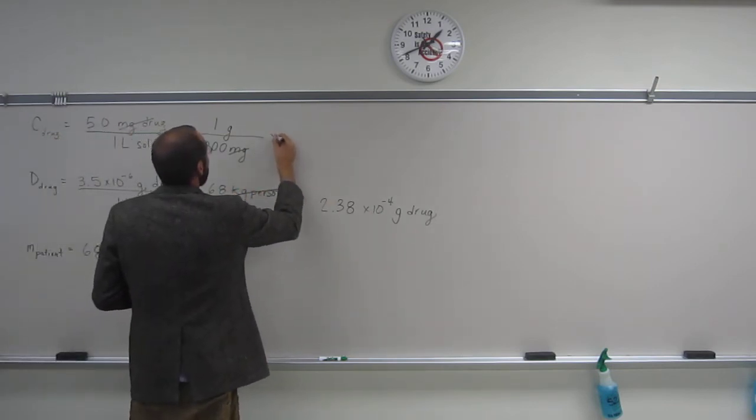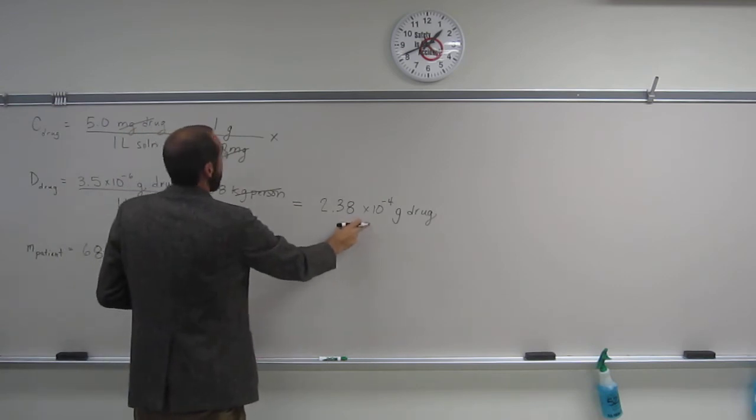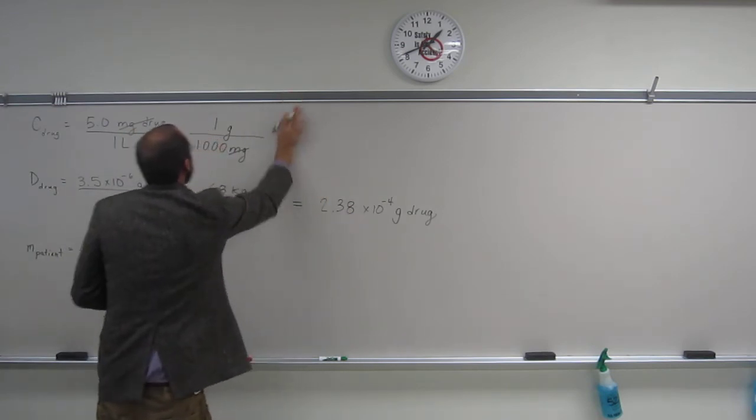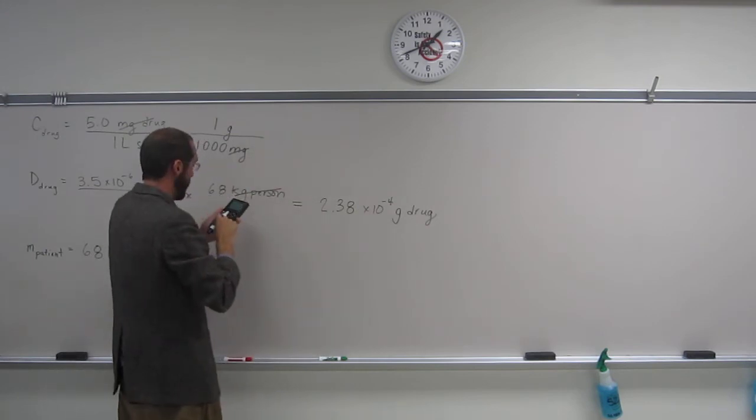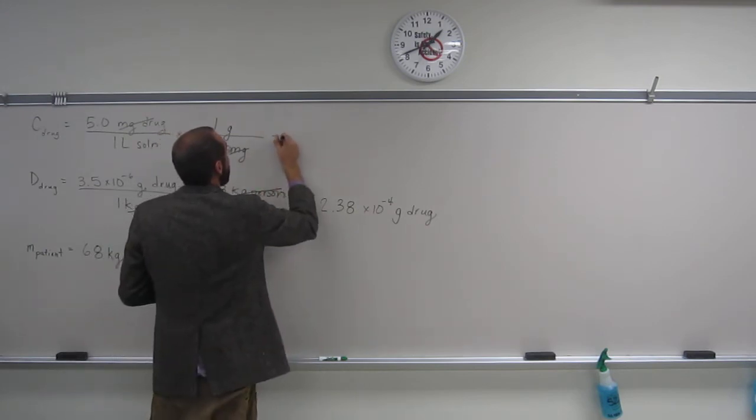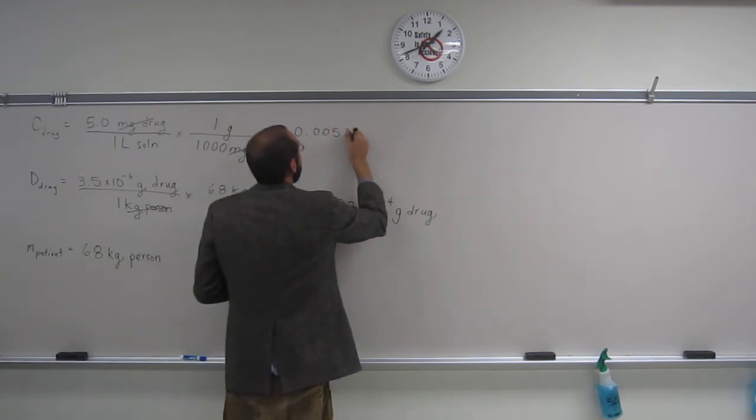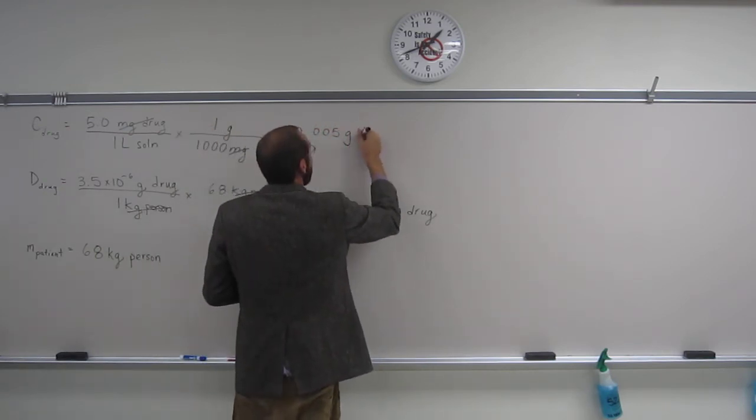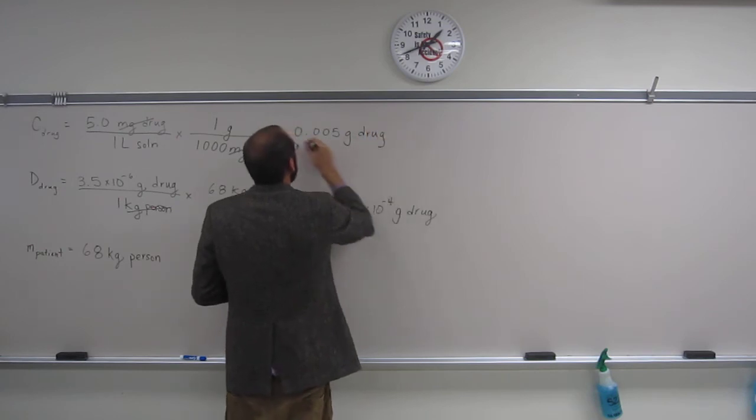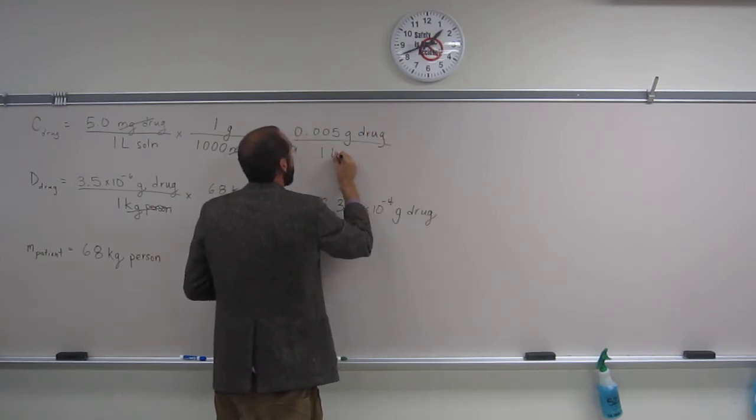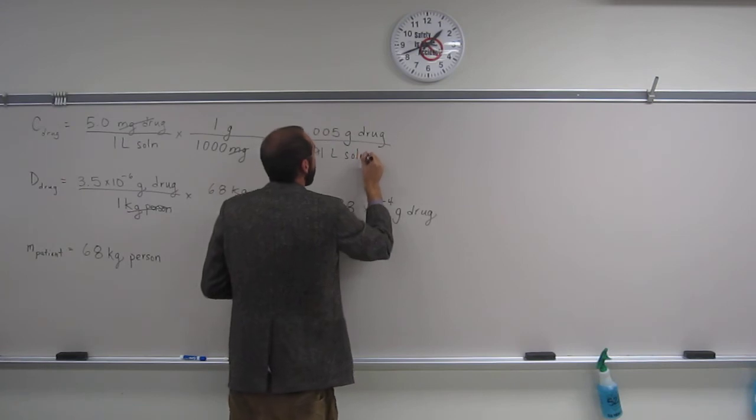And so then we're going to take, well, let's just do this first. And so, 5 divided by 1,000, of course, would be 0.005 grams of the drug per 1 liter of solution.